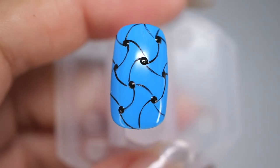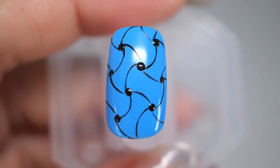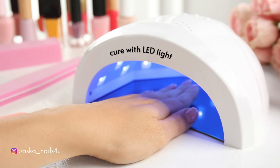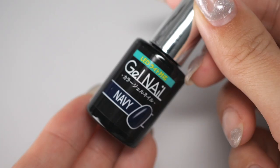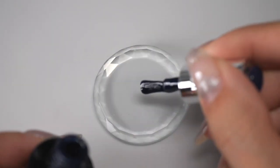When you finish drawing the curved line, cure it. Next, take a small amount of navy on a palette.